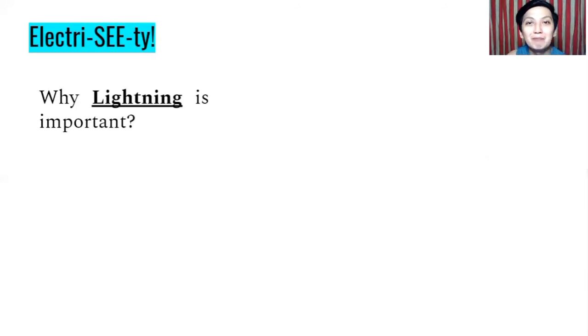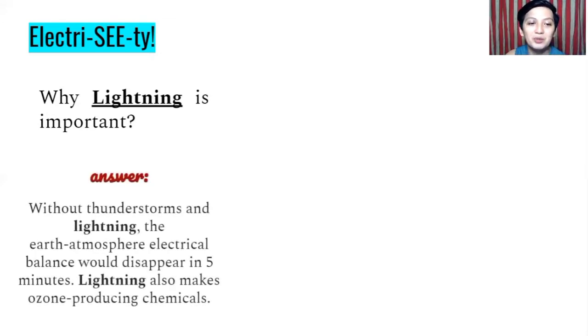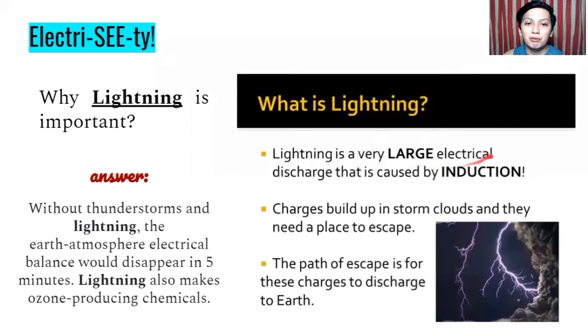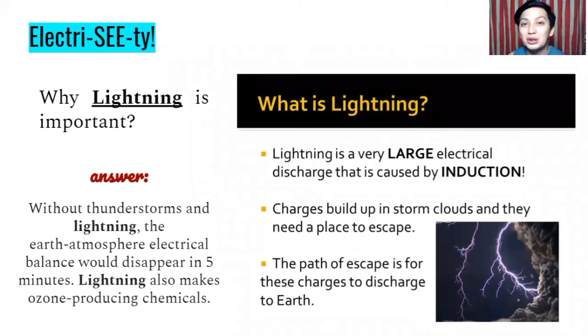And let us see this one, electricity. Why lightning is important? The answer is that without thunderstorms and lightning, the earth atmosphere's electrical balance could disappear in five minutes. Lightning also makes ozone producing chemicals. Lightning is a very large electrical discharge caused by induction. Charges build up in storm clouds and they need a place to escape. The path of these charges to discharge to earth. So hindi naman nakakadagdag ng ozone layer ang lightning but it plays a very important role when it comes to ozone producing chemicals. At least medyo natutulungan ito yung ozone layer na nasisira to protect us from the heat of the sun. So that's why lightning is very important and it is produced because of charging by induction.